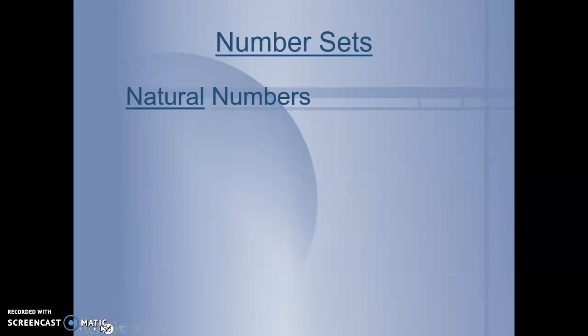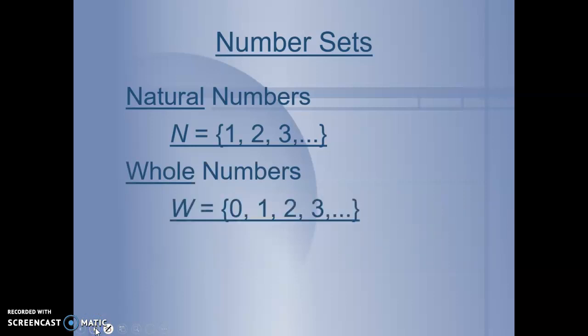When we talk about number sets, we can categorize or organize our numbers in different ways. Our natural numbers, represented with an N, are also what we call our counting numbers. We naturally count 1, 2, 3, and so those are natural numbers. Natural numbers are a subset or part of whole numbers. Whole numbers, represented with the letter W, are just the natural numbers with the addition of 0. 0, 1, 2, 3.